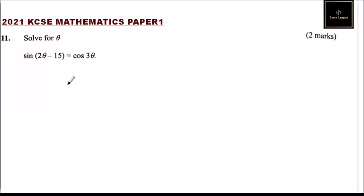Question number 11, solve for theta where sine(2θ - 15) equals cos 3θ. So we need to express this the same way and we use a rule when you are given...